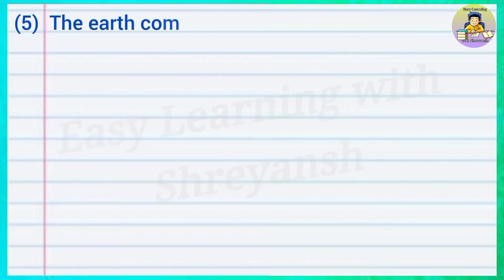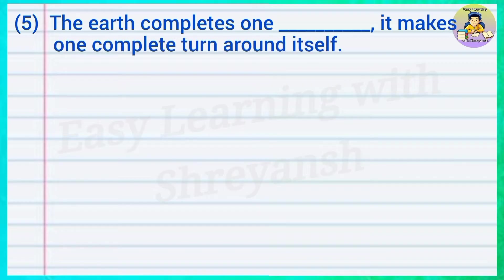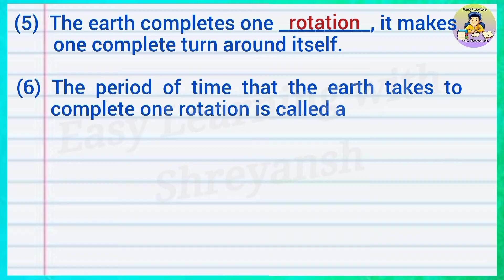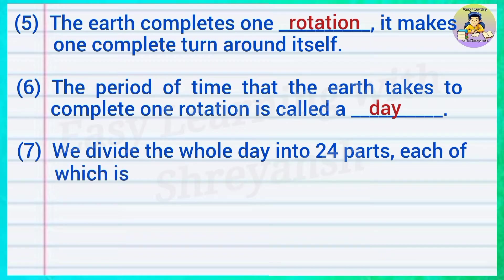Five — the earth completes one — it makes one complete turn around itself — answer: rotation. Six — the period of time that the earth takes to complete one rotation is called a — answer: day. Seven — we divide the whole day into 24 parts, each of which is called a — answer: hour.